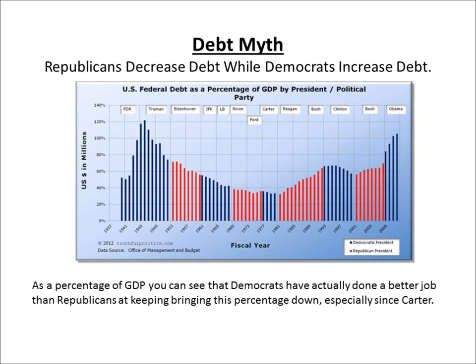If you look at this graph, this is the U.S. federal debt as a percentage of GDP by president or political party. Now, I know that the president doesn't get the final say on the budget — he does propose a budget, Congress has to pass it, the Senate has to pass it, and the president has to sign it. The reason the president gets credit and blame for this is because the buck kind of stops with him. He can veto a budget, and it takes two-thirds of the House and the Senate to override his veto, which happens very rarely.